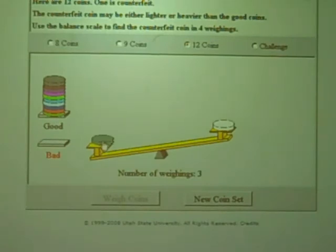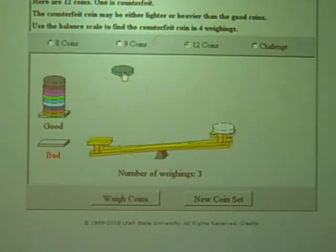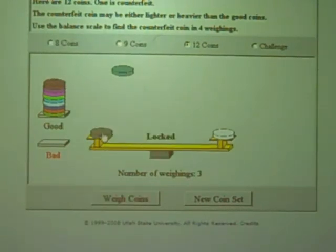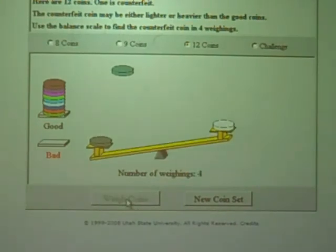So we'll take this off. This one is heavier. And we'll see if one of the good coins balances with this one. It doesn't balance. If it did balance, it would be a good coin. So we know that this one is the bad one, and it's lighter.